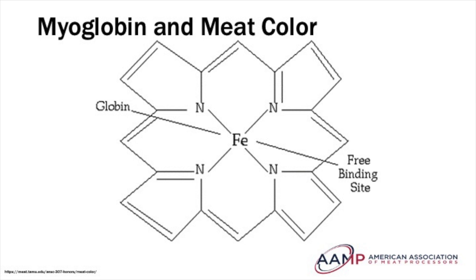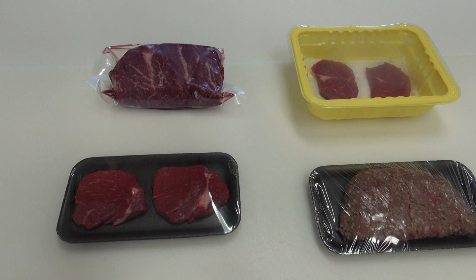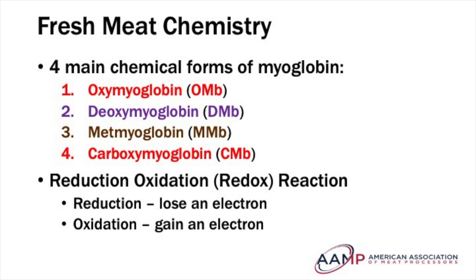Myoglobin has a very unique and purposeful chemical structure. At the protein's core sits a single iron atom that can bond with up to six other atoms. Four of these six available bonds are to nitrogen atoms within what is called a porphyrin ring structure. The fifth coordinate is bonded to a coiled globular protein structure that allows for interactions with other proteins. The sixth and final coordinate is the most important to meat color, as it allows for reversible bonds with certain molecules, called ligands, that dictate what color the meat exhibits.